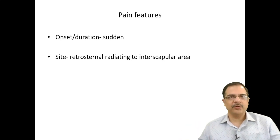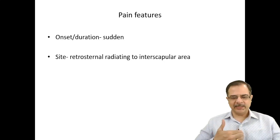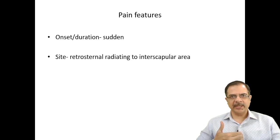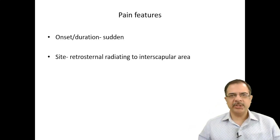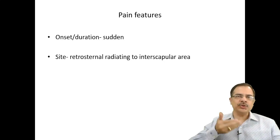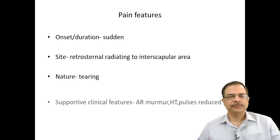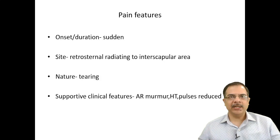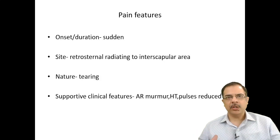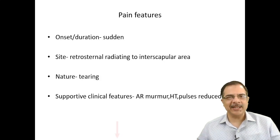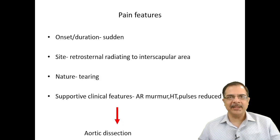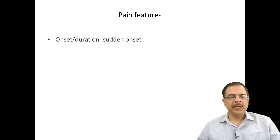Another cause is sudden onset of chest pain. There are very few causes of sudden onset chest pain. The site is retrosternal, radiating to the interscapular area — originating retrosternally and going posteriorly, following the arch of the aorta. The patient describes it as a tearing pain. Additional features include an aortic regurgitation murmur, risk factor of hypertension, and reduced pulse. This is typically aortic dissection — a life-threatening medical emergency.